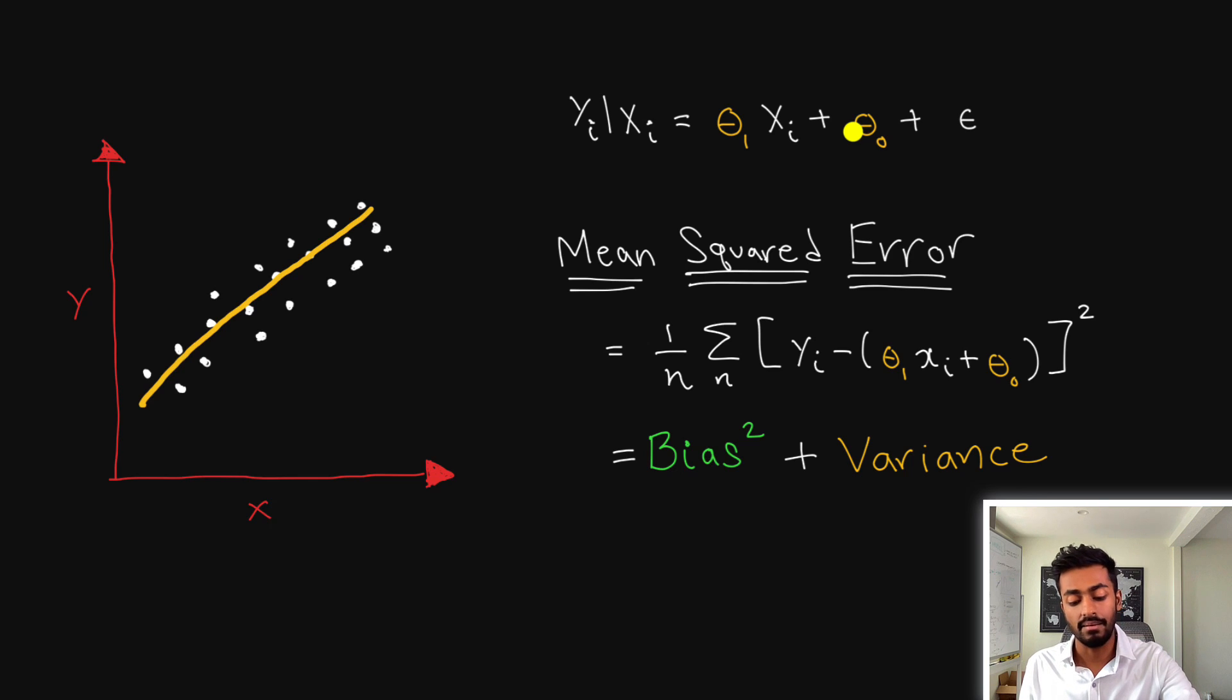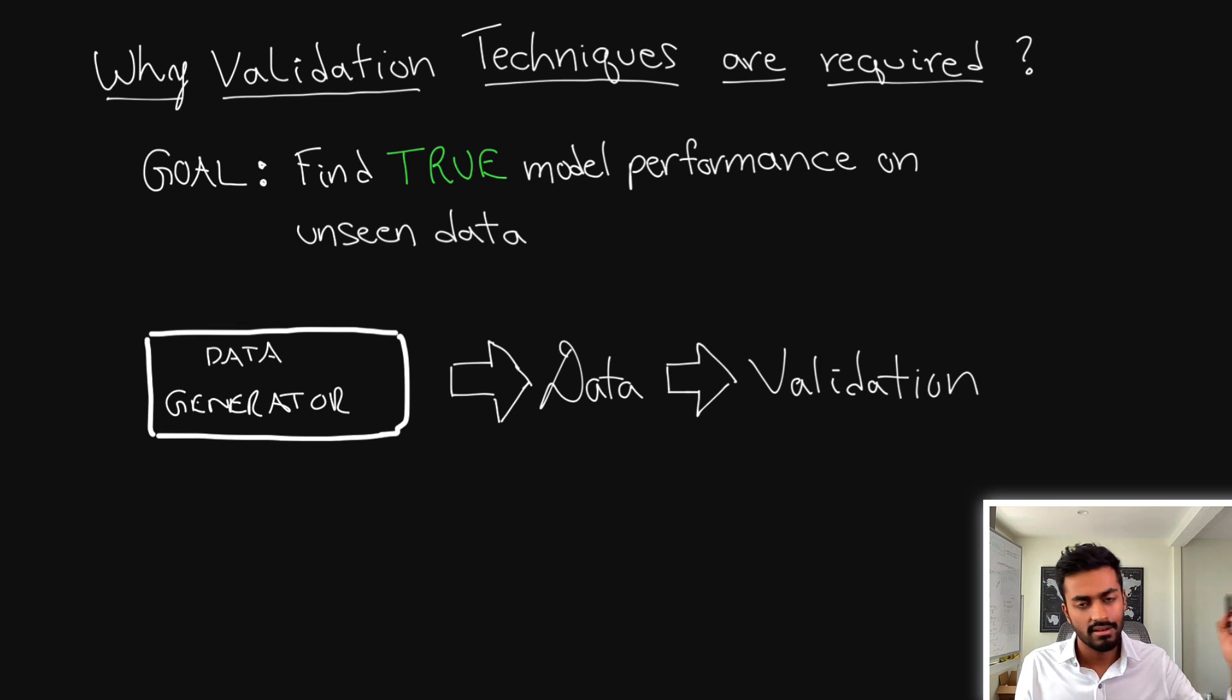And because mean squared error is proportional to both of these a lower mean squared error would involve creating a better model. Mean squared error is used during training as well as evaluation time of your model. Now with model evaluation why are validation techniques themselves required?